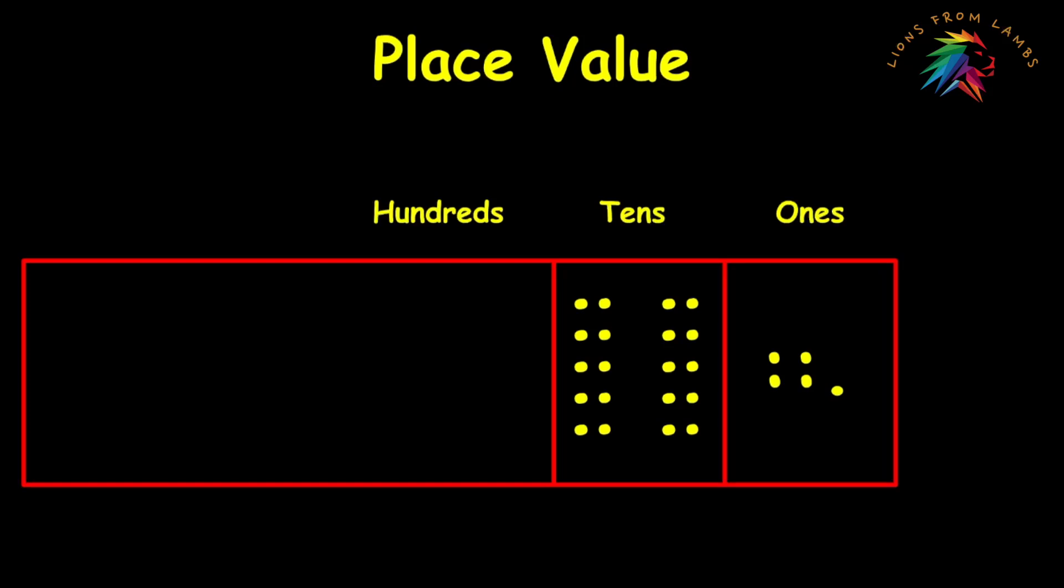Okay. In the hundreds place, we're going to take those dots and we're going to add the dot, one dot, which was the digit in the hundreds place to itself 100 times. Now it's easy with a hundred or with the digit one to do that, but let's go ahead and go through it and see what we've got.